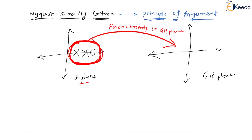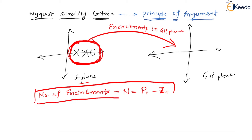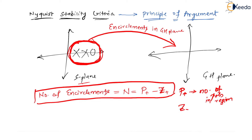The Principle of Argument states that the number of encirclements N is equal to P+ minus Z+, where P+ is the number of poles in the region and Z+ is the number of zeros in the region.